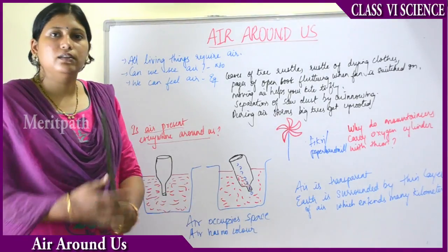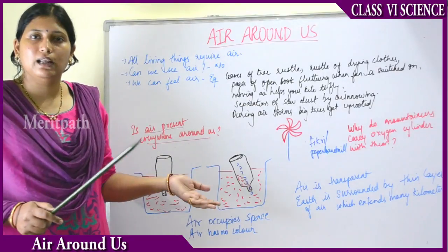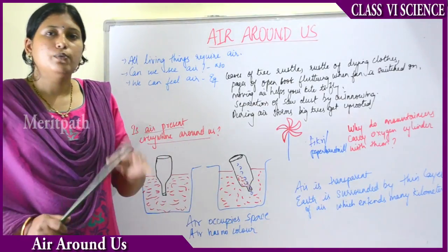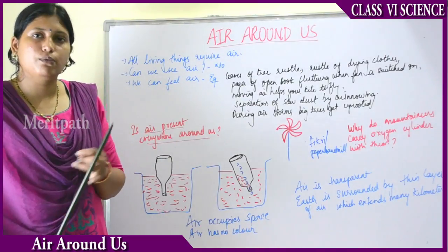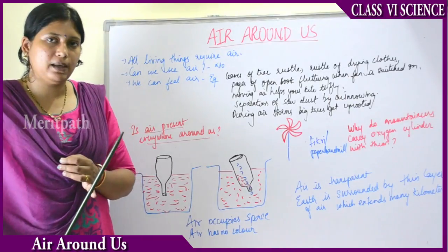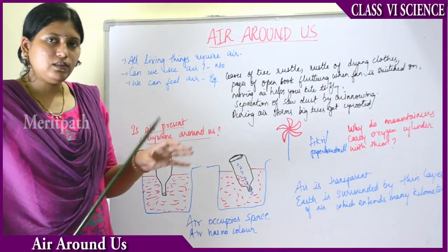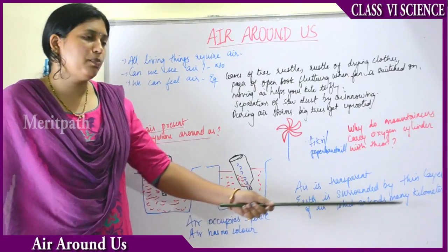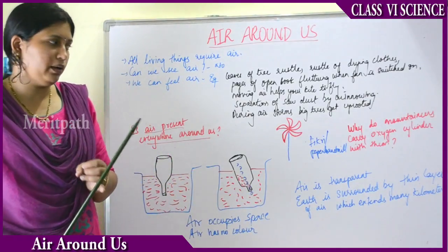The earth we live on is surrounded by a thin layer of air called the atmosphere, which extends thousands of kilometers from the surface of the earth.